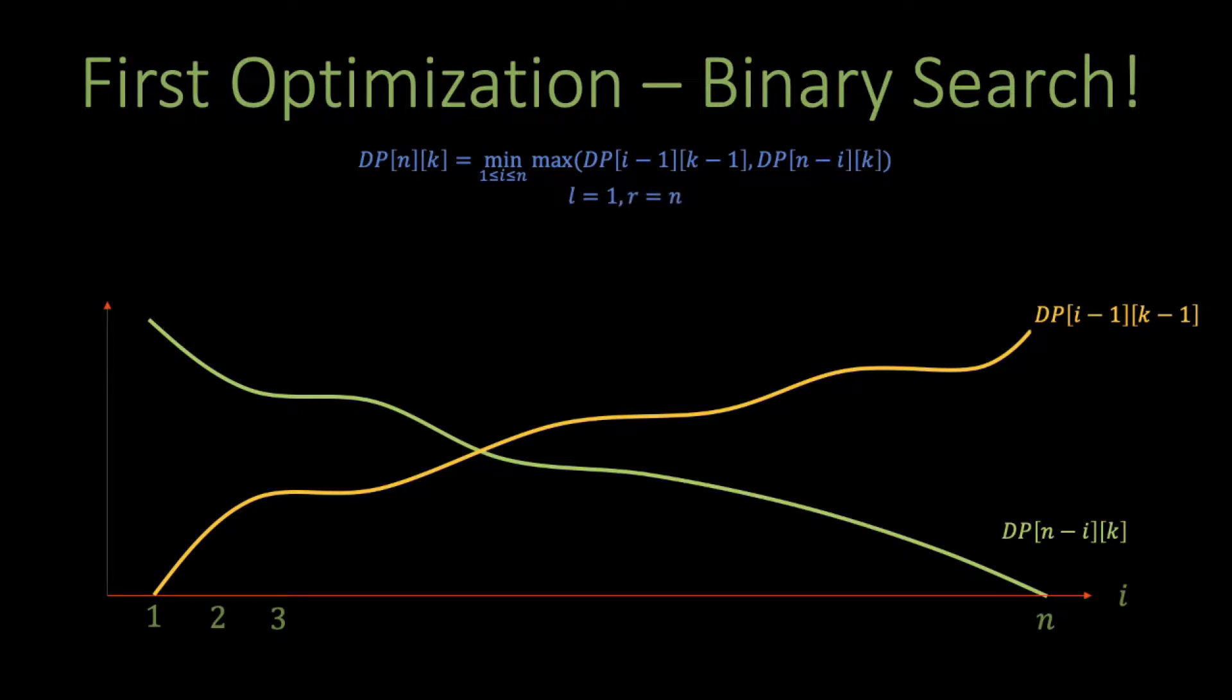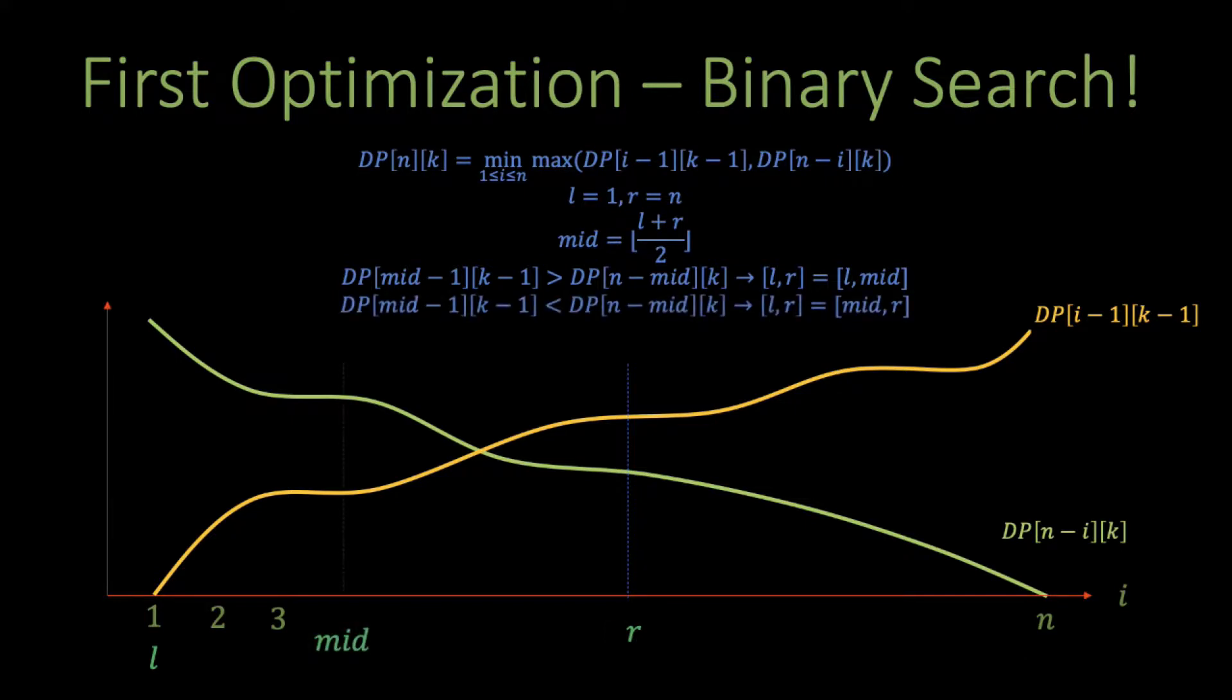We will start by setting l equals 1 and r equals n. We will then look in the middle of this interval, or (l+r)/2. If we find that DP[mid-1][k-1], or the yellow curve at i equals mid, is greater than DP[n-mid][k], or the green curve at i equals mid, then we would know that the intersection point is to the left of mid. And so we would update our search interval to [l, mid]. If we find the yellow curve is smaller than the green curve, then we would know that the intersection point is to the right of mid, so we would update the search interval to be [mid, r]. If we reach a case where the two curves are equal, then we have found our index i*, and we can update the search interval to be [mid, mid], as mid is the index we are searching for.